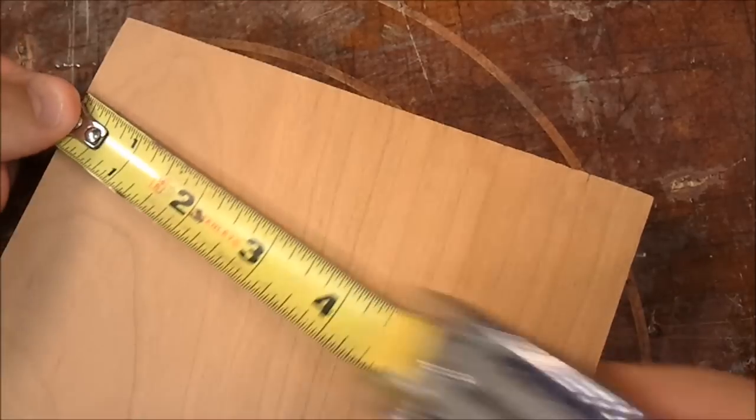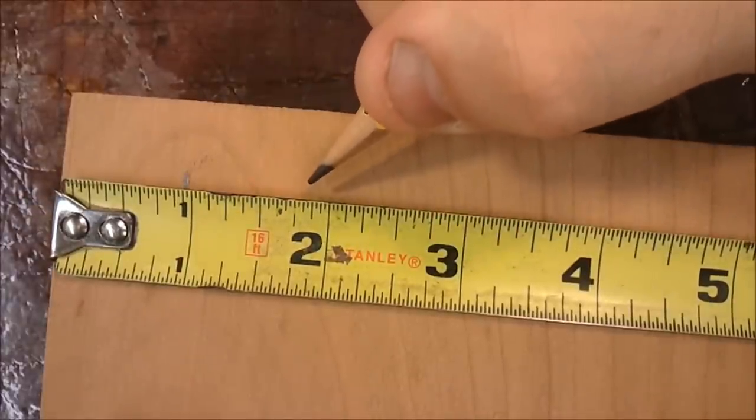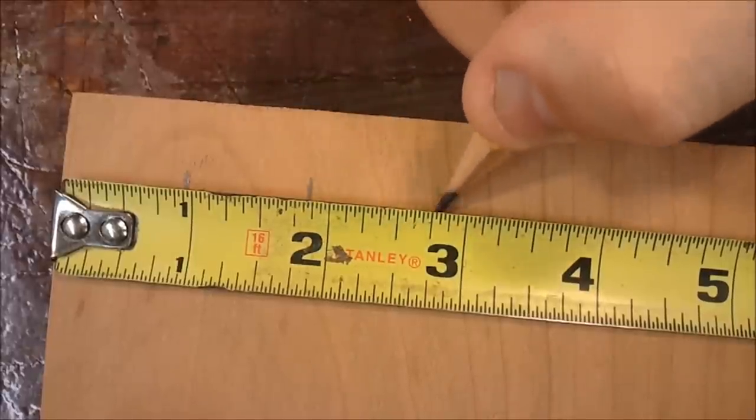So you want to mark a 6.5 inch board into 7 even parts. You can use your intuition, which is flawed like everybody else's, and just kind of guess that each piece will be a little bit smaller than an inch.